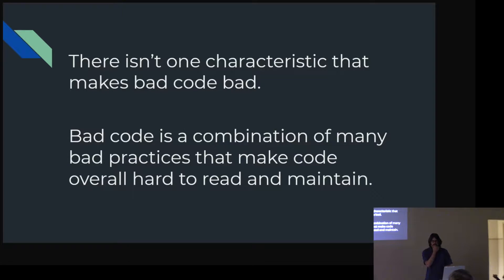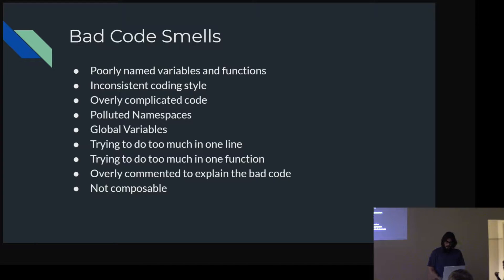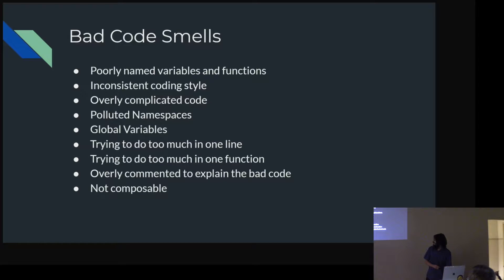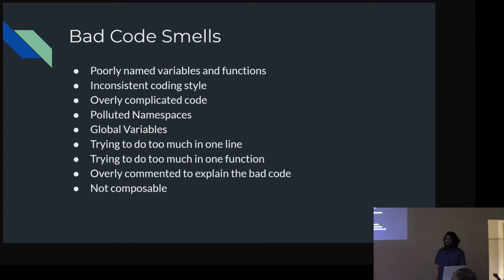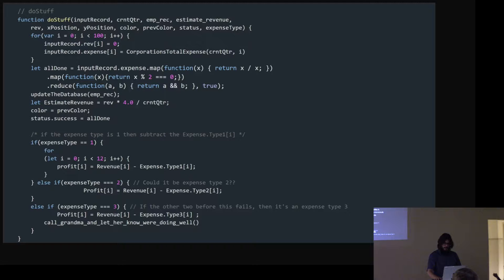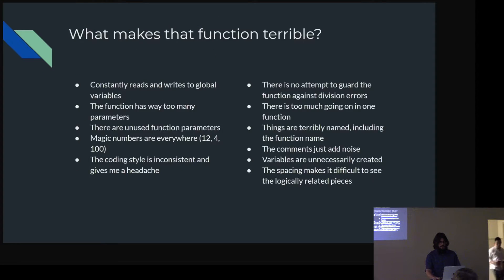When you're looking at a function like that, it's hard to know where to start when you need to edit or fix it. To generalize what the problems were: badly named variables and functions, inconsistent coding styles, overly complicated logic, global variables, too much trying to do in one line — I had a map of a map of a filter, good luck trying to edit that. And there were comments that just did nothing, like 'if the expense type is one, then subtract one.' These comments just add noise.